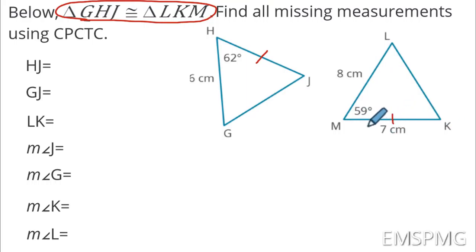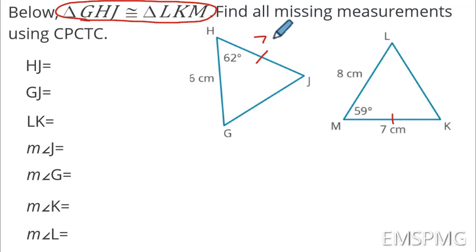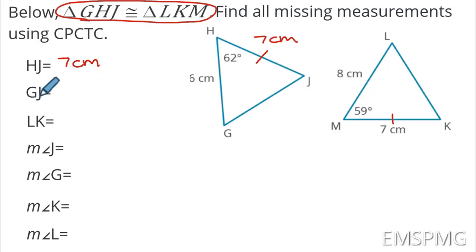Hello ladies and gentlemen, this is Mr. Mayer. Thank you for tuning in. This video will discuss corresponding parts of congruent triangles, abbreviated as CPCTC. By the end of it, you want to be able to say: I can use a congruence statement to find missing values between two congruent triangles.